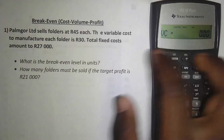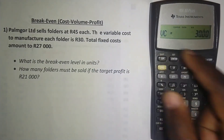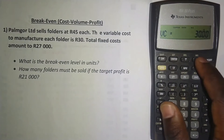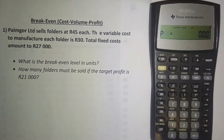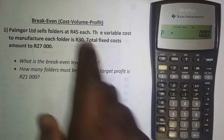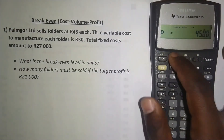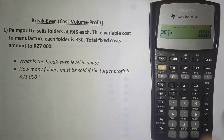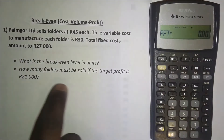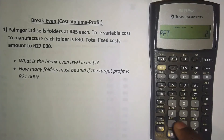The variable cost is 30 rand, so enter 30, press Enter, then press the downward arrow. The selling price is 45 rand, press Enter, then press the downward arrow. This time the profit is 21,000 rand, so enter 21,000 and press Enter.